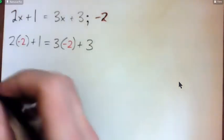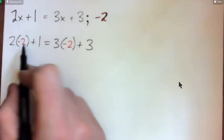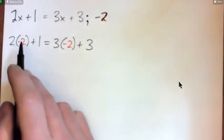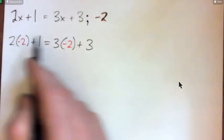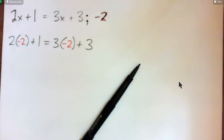So we plug the negative 2 in. For folks watching at home on the video, always use parentheses when you're plugging in for the variable because it's just good practice, especially if you're dealing with negatives and exponents.